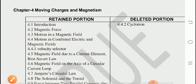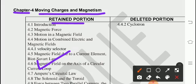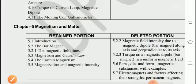From the fourth chapter, Chapter 4, Moving Charges and Magnetism, Retained one is most of the lessons have been retained, only 4.2 Cyclotron, this one was deleted. Remain all chapter there.